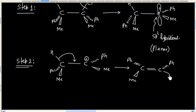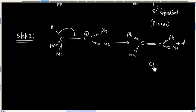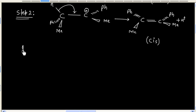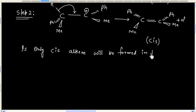Now if you see this alkene, this is cis alkene. But the question is, is only cis alkene will be formed in this reaction?